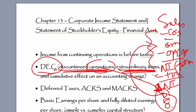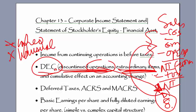The second item is extraordinary items, and they have to be infrequent and unusual — they must meet those two classifications. So if you had a hurricane in the Gulf Coast, that would not be extraordinary because it happens all the time. If you had a hurricane in Illinois, which would be impossible — it would be a tornado — those kind of items would be extraordinary and should be recorded separately in the extraordinary section. So if you had a fire in a factory, and it's infrequent and unusual, all the expenses incurred because of that would go down in this section.